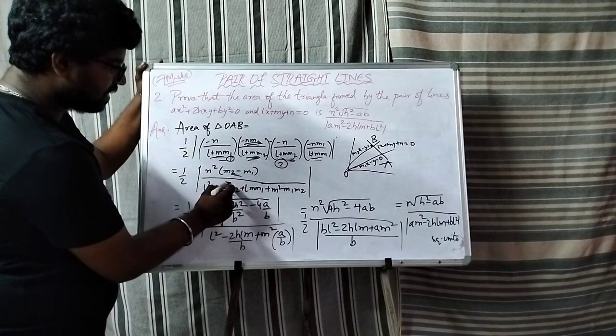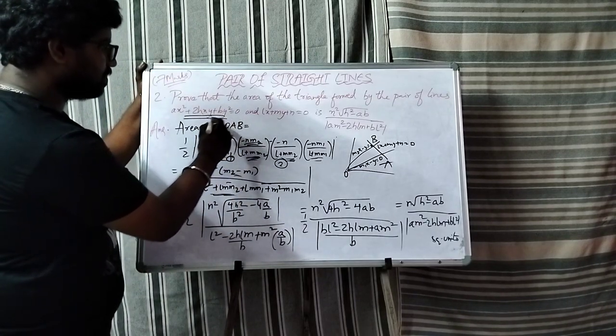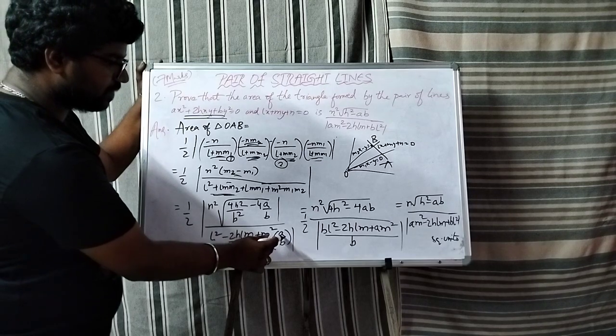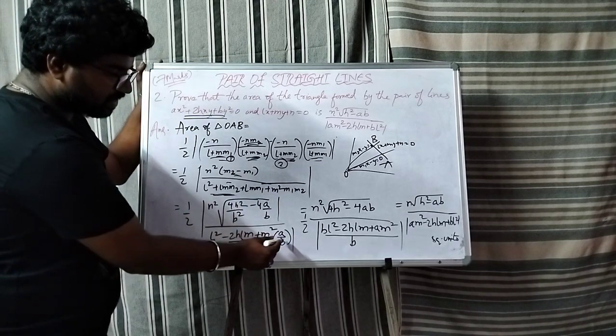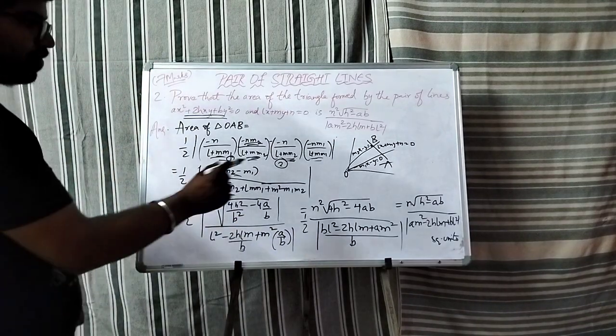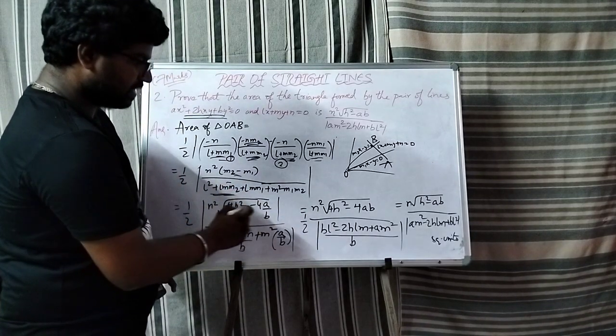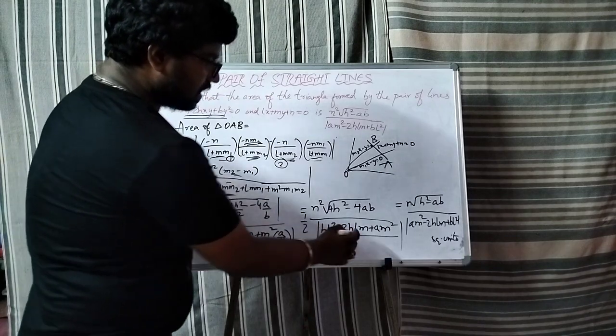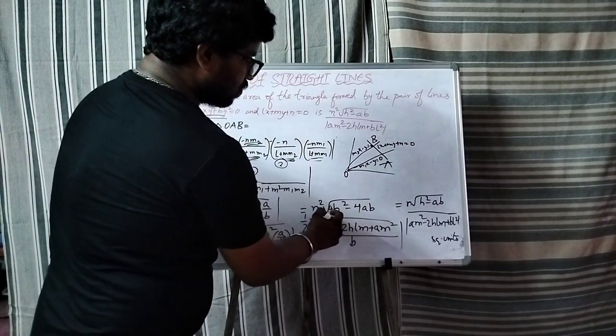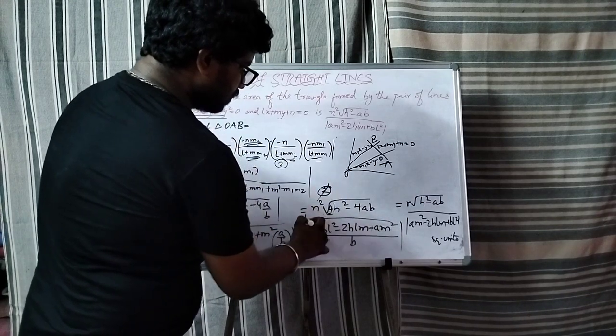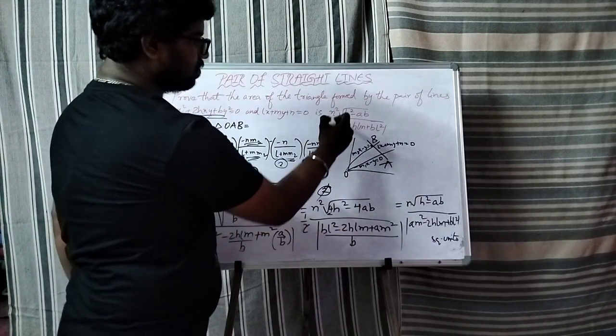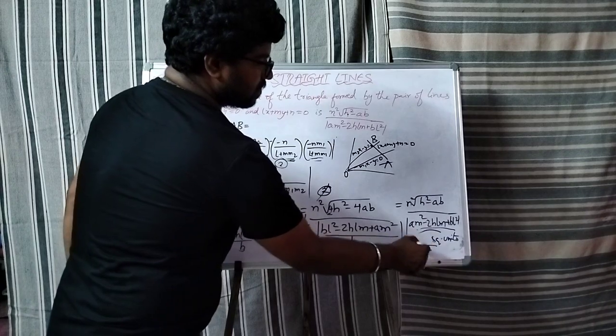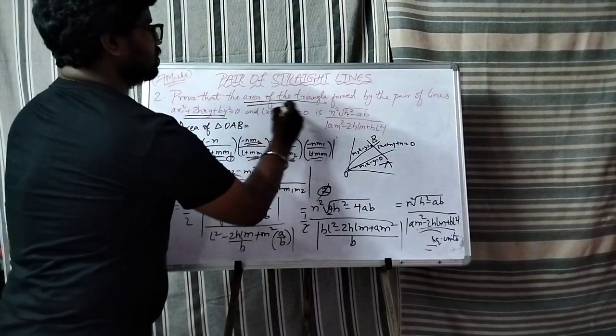Here we compare the straight lines, ax square plus 2hxy plus by square, and compare with l square minus 2hlm by b plus m square into a by b. We substitute the sum of the roots and product of the roots. This gives half modulus n square into root over h square minus ab divided by am square minus 2hlm plus bl square, which is the area of the triangle.